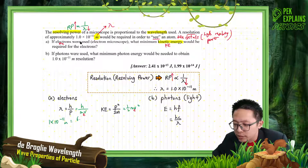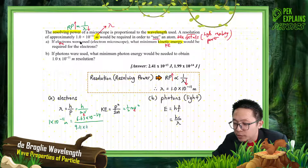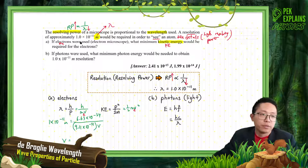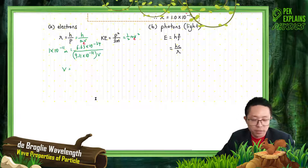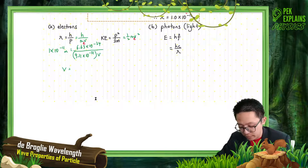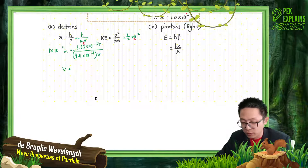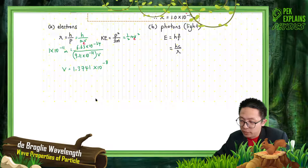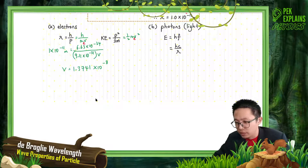Let us calculate now. Wavelength is 1×10⁻¹¹ meters. Then h is 6.63×10⁻³⁴. Mass of electron is 9.11×10⁻³¹. And then velocity. So I calculate. Let's calculate out the velocity: 1×10⁻¹¹ times 9.11×10⁻³¹, divided by 6.63×10⁻³⁴. I got that — multiply and then divide. But then: 1 divided by that answer.